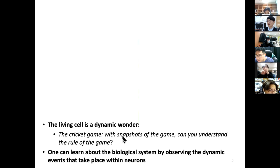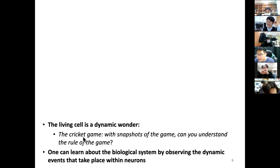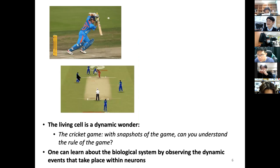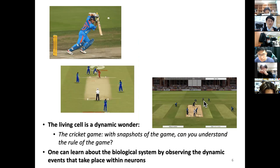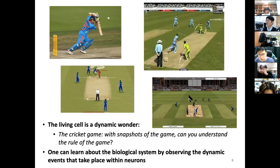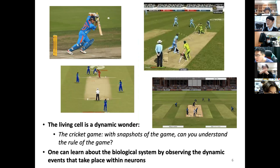I use the example of cricket. If you look at snapshots of a cricket game, it may be very hard to understand the rules of the game. Think of those snapshots as images you take of neurons and glia inside the brain. Similarly, one can learn about a biological system by observing dynamic events within neurons. The best way to understand cricket is to watch a movie and see how they score. The rules of the game are best understood by watching a dynamic sequence rather than several static snapshots.